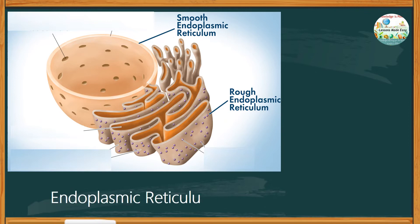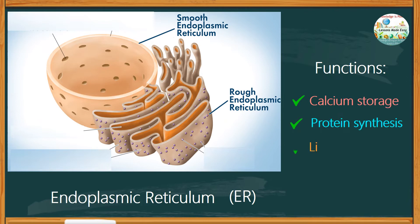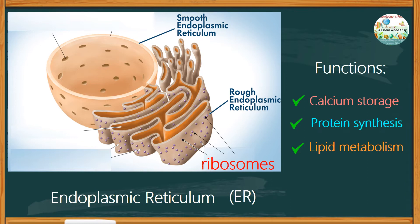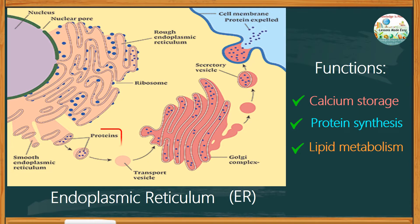The endoplasmic reticulum, or ER, is a large dynamic structure that serves many roles in the cell, including calcium storage, protein synthesis, and lipid metabolism. It comes in two forms: the rough ER, whose surface is studded with ribosomes giving it a rough appearance, and the smooth ER, which does not have ribosomes. The rough ER synthesizes and secretes proteins, hormones, and other substances in the glands.